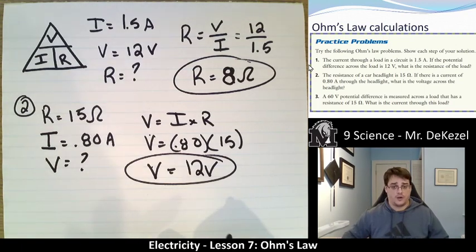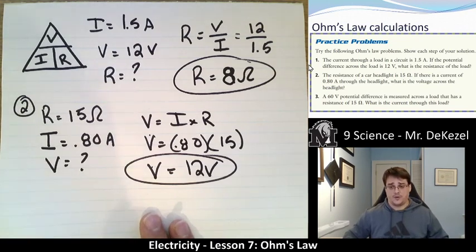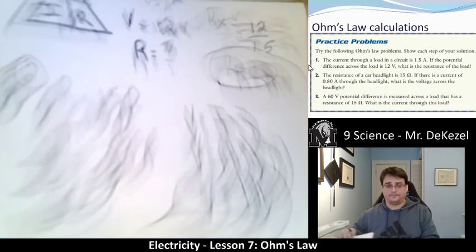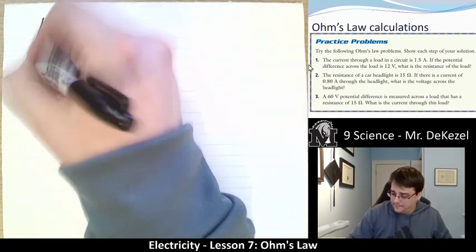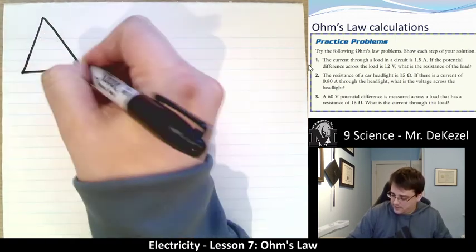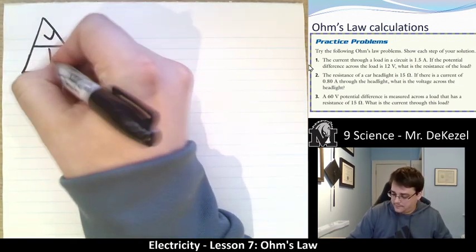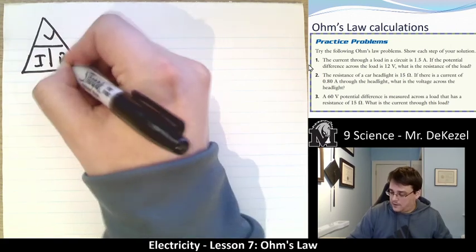If you're feeling comfortable, pause it here and try the third one. There's actually lots of problems for you to do after this. But I'm going to do the third one here and you can see if you got it right. I'm going to draw my triangle again, just so that I have it here. It's very handy. I and R.